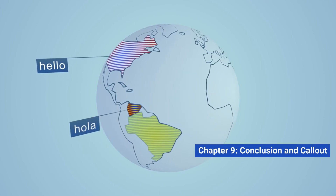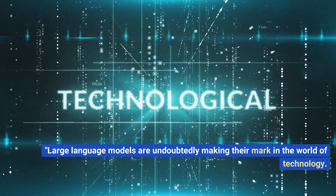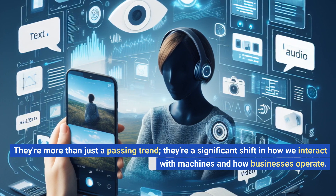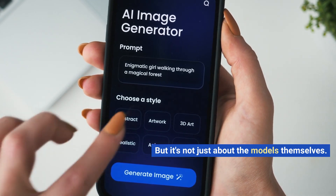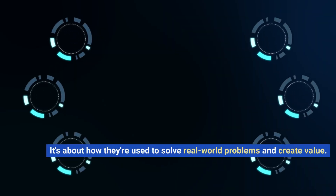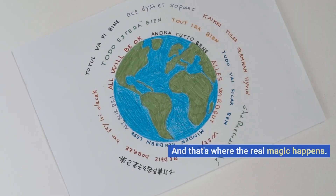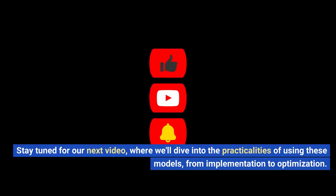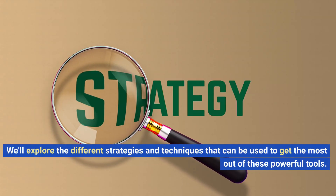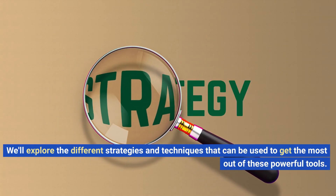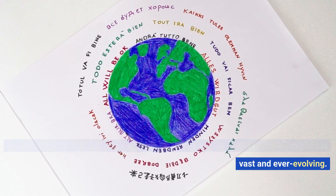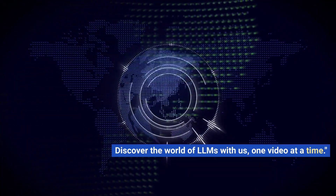Chapter 9: Conclusion. Large language models are undoubtedly making their mark in the world of technology — they're more than just a passing trend. They represent a significant shift in how we interact with machines and how businesses operate. It's about how they're applied, integrated into systems and services, and used to solve real-world problems and create value. Stay tuned for our next video, where we'll dive into the practicalities of using these models, from implementation to optimization, exploring strategies and techniques to get the most out of these powerful tools. The world of large language models is vast and ever-evolving — discover it with us, one video at a time.